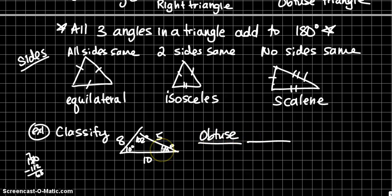Last name, by sides. So are all sides the same, two sides the same, or no sides the same? No sides are the same. So this type of triangle is an obtuse scalene triangle.